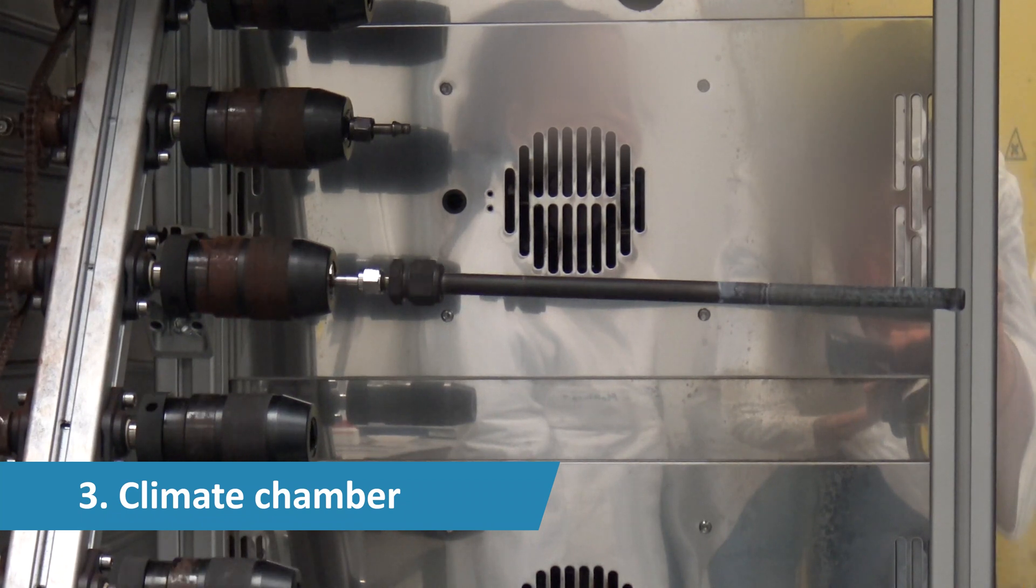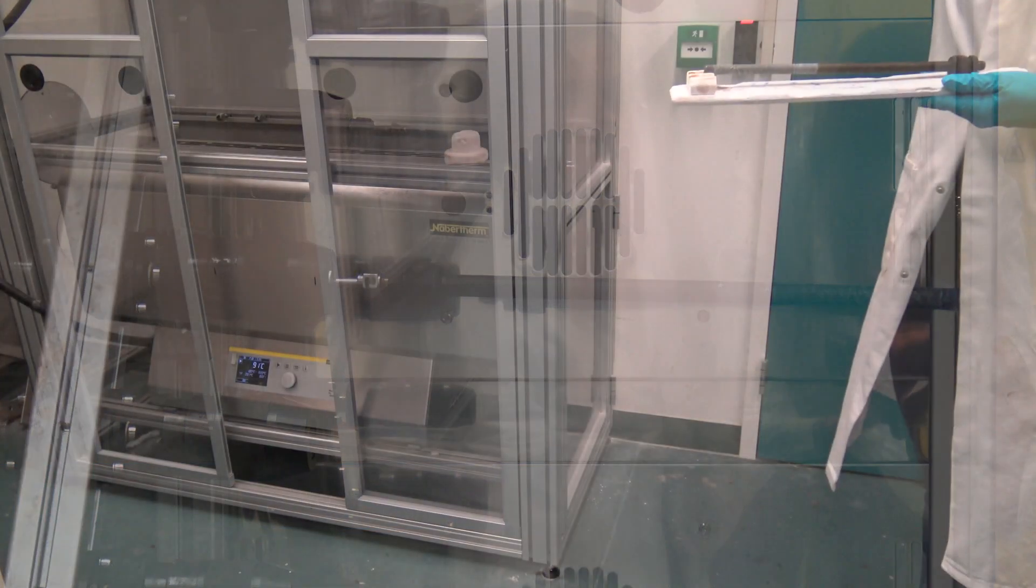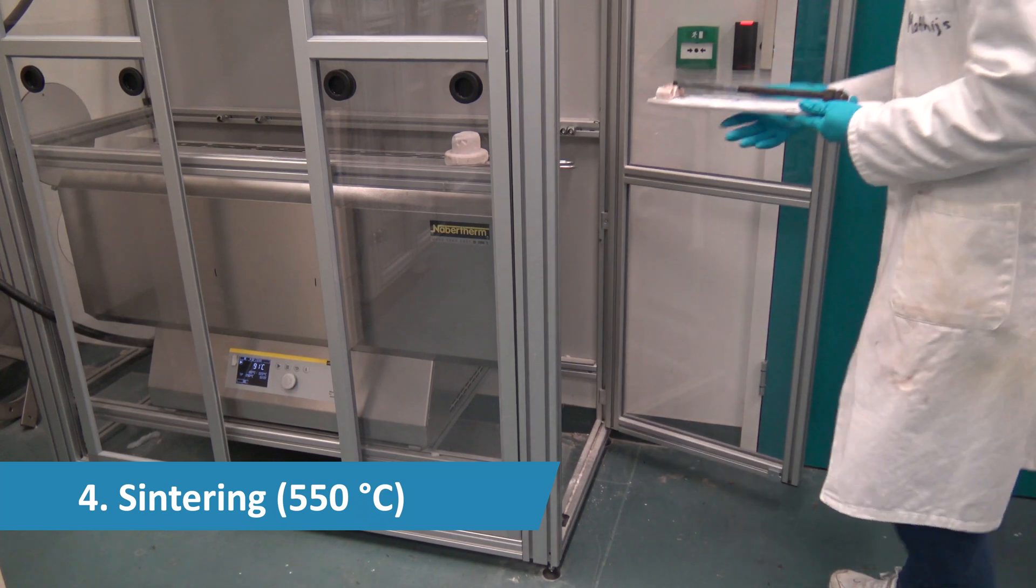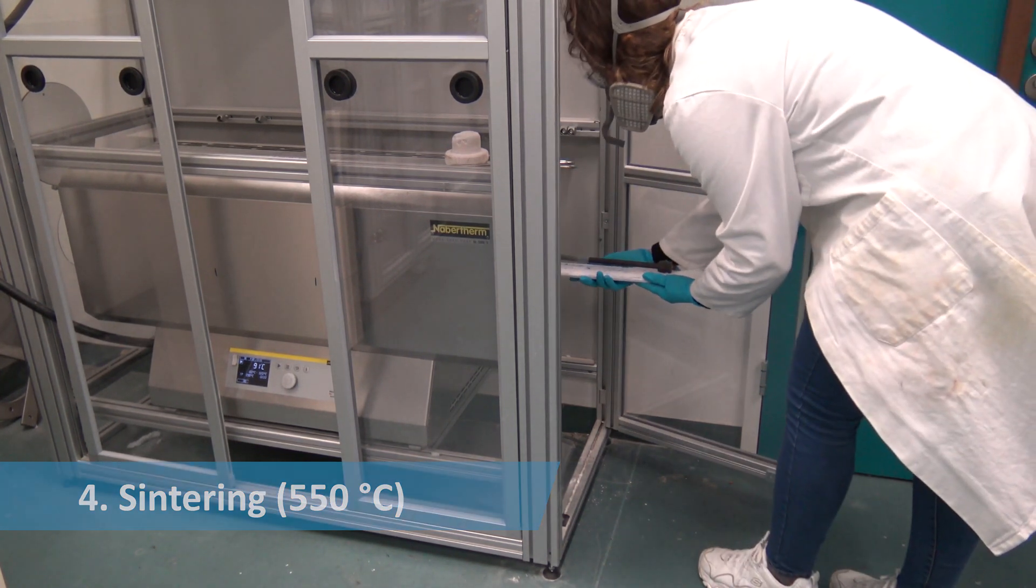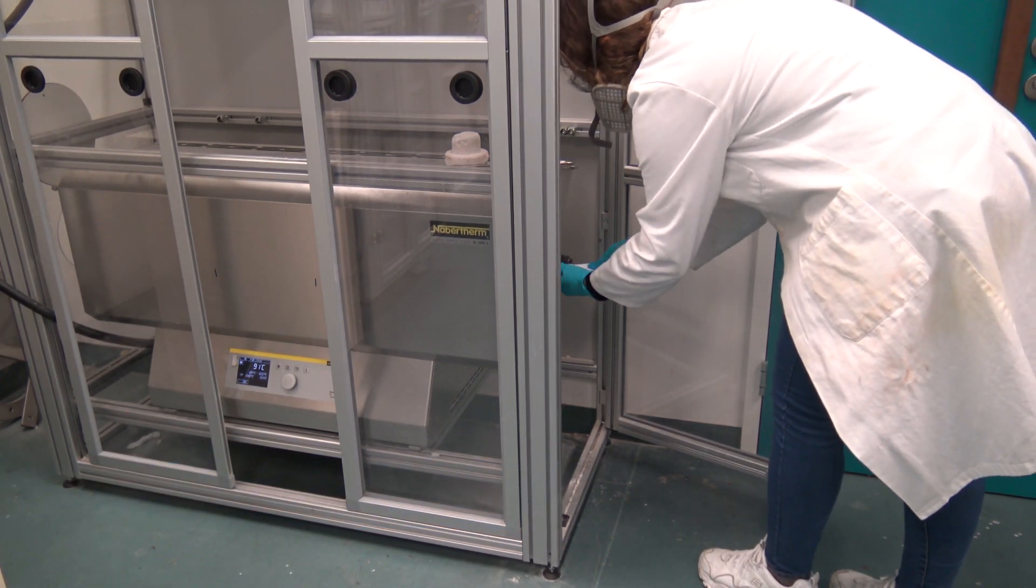The deposited layer is dried in a climate chamber at 40 degrees Celsius. To finalize the diffusion protection layer, the support is sintered at 550 degrees Celsius in a static air furnace.